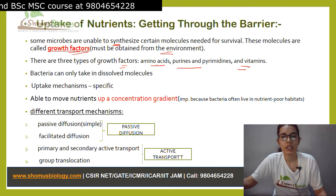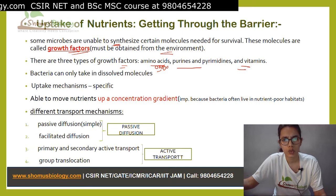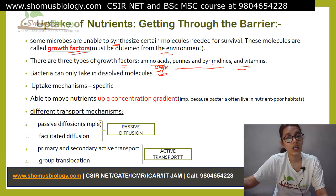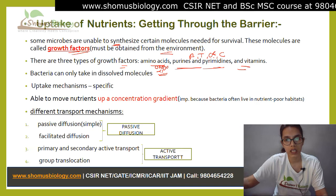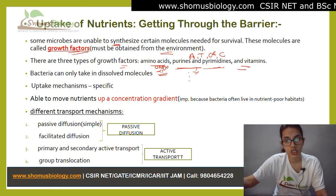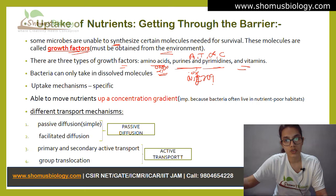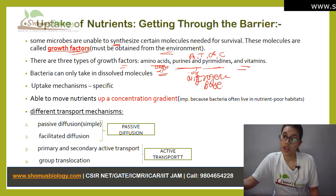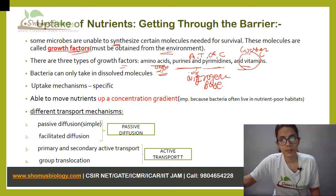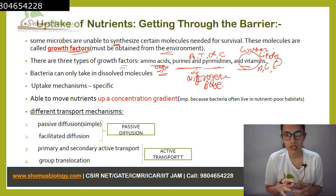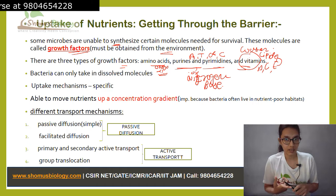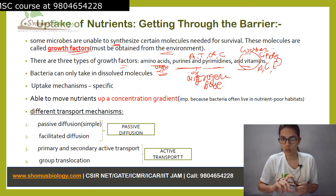Amino acids are the building blocks of protein — there are 20 to 21 types present. Purines and pyrimidines are A, T, G, C — the backbone of DNA or nucleic acid. They are made up of purines and pyrimidines which have a nitrogen base. And then there are vitamins, which could be water-soluble or lipid-soluble — for example, vitamin A, C, or vitamin E. Some amino acids work as growth factors, meaning bacteria need them but cannot synthesize them, so they must obtain them from outside.